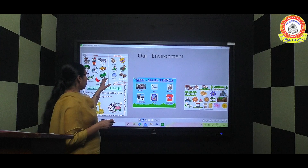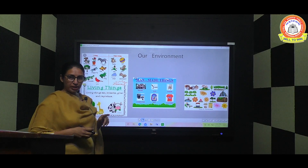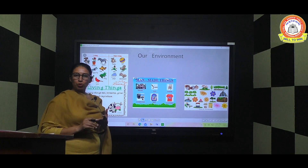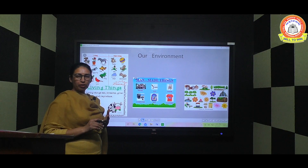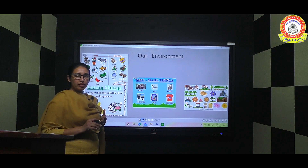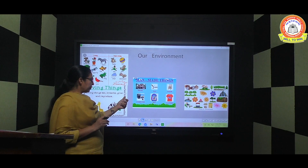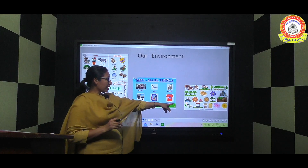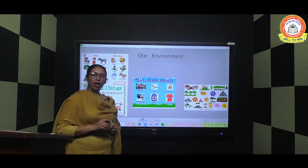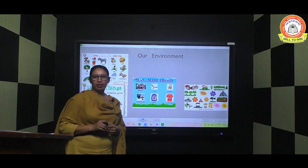To summarize: things which have life are called living things; things which do not have life are called non-living things; things which are made by man are called man-made things; and things which are found in nature are called natural things. Thank you for listening!